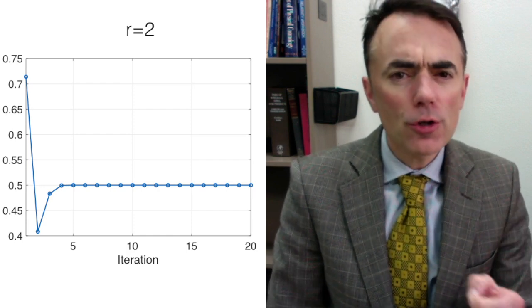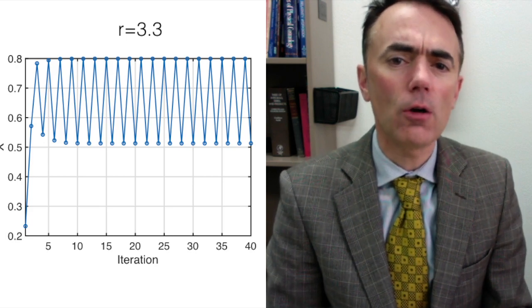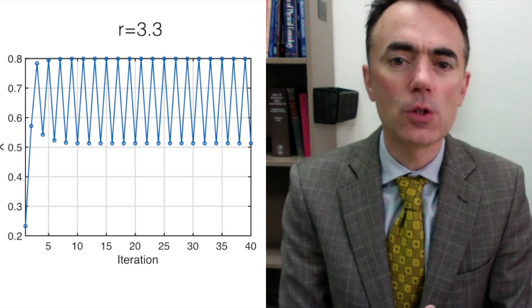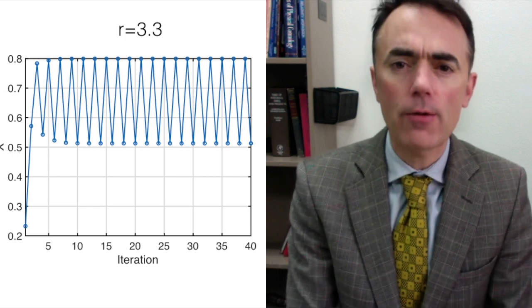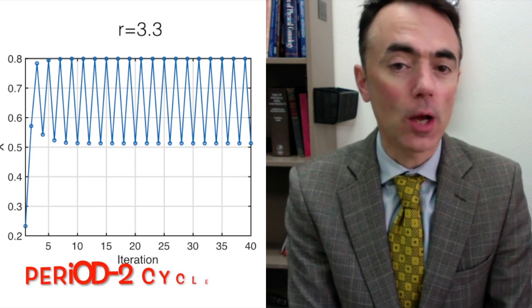Values a bit larger, let's say 3.2, the population increases but then oscillates between two large populations. The system needs two iterations, two generations to go back to a reference value. This we call period 2 cycle.